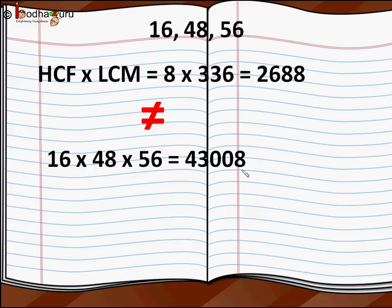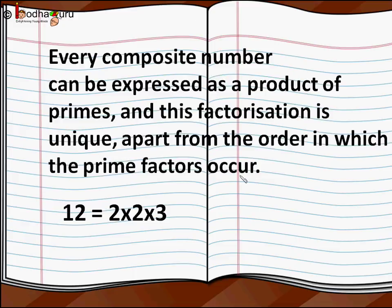This holds true only for 2 numbers. So we can say prime factorization of a natural number is unique except for the order of its factors. 12 = 2×2×3. It cannot be expressed as the product of any other prime factors.